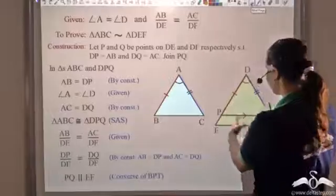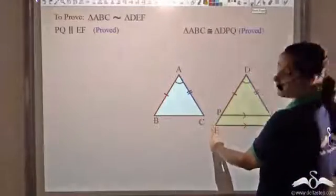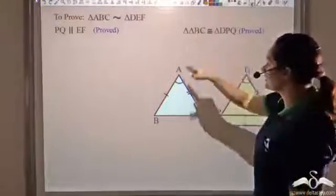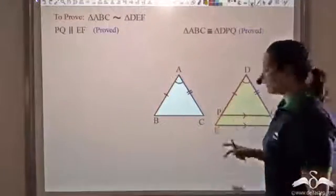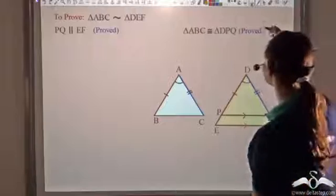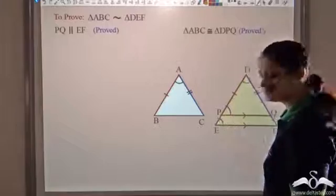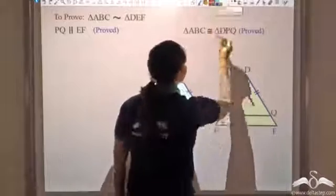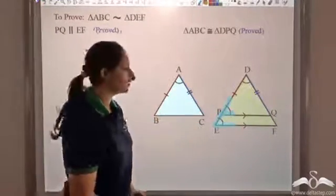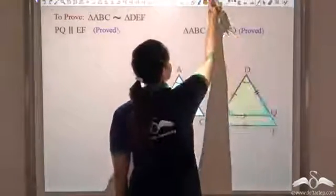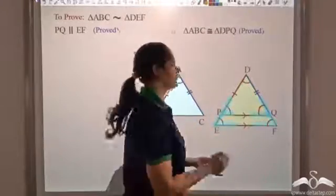So now we want to prove that triangle ABC is similar to the larger triangle DEF. I have already proved that triangles ABC and DPQ are congruent, and I have also proved that PQ is parallel to EF. Since these two lines are parallel, the corresponding angles would be equal. So angle DPQ equals angle E, which you can spot using an inverted F for corresponding angles.